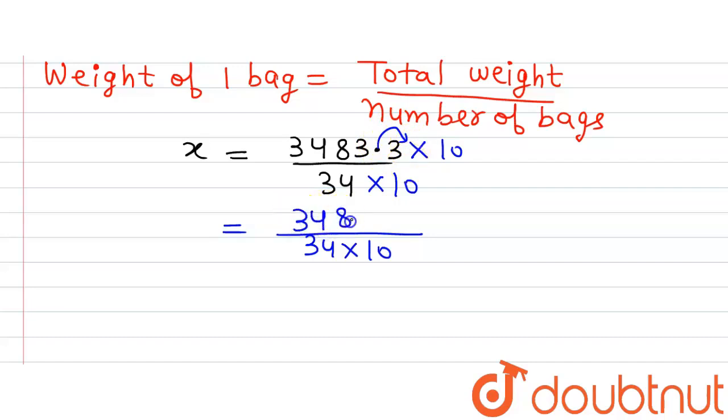Now dividing it, we will get 34,833 when it will be divided by 34, it will give us 1024.5.